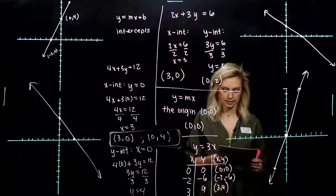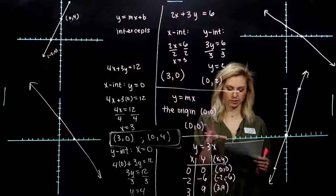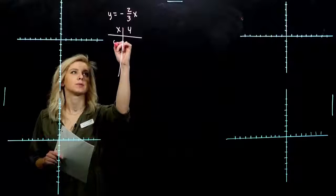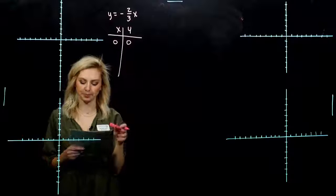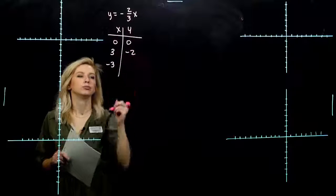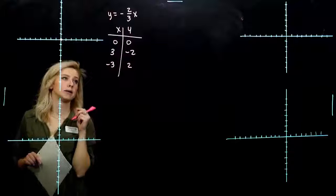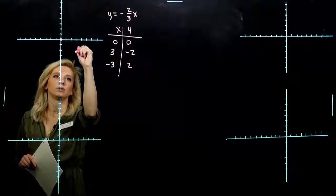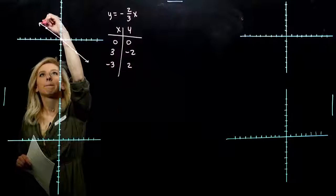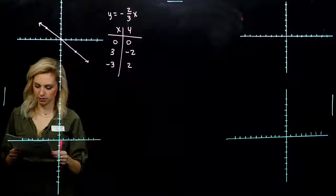Graph y equals negative two-thirds x. Think about what values of x will be nice to plug in — multiples of 3 work well. It also goes through the origin, since plugging in 0 for x gives 0 for y. Using x equals 3 gives y equals -2, and x equals -3 gives y equals 2. The line passes through the origin, which is both the x- and y-intercept, and it's decreasing left to right because the coefficient of x is negative.